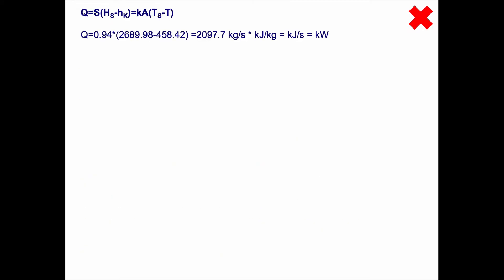I also need the area. To calculate the area, we need to calculate how much energy is transferred. S is 0.94, and we multiply that with the difference between the enthalpy of the steam and the condensate. We get 2097.7 kilowatts. I check the units to see that it's correct.